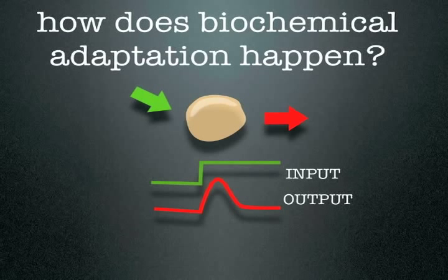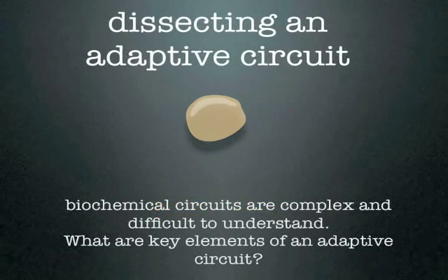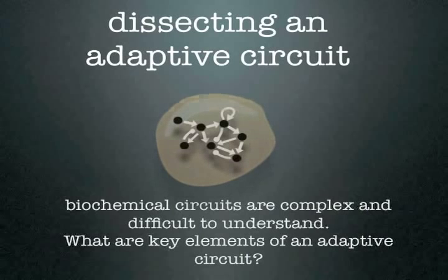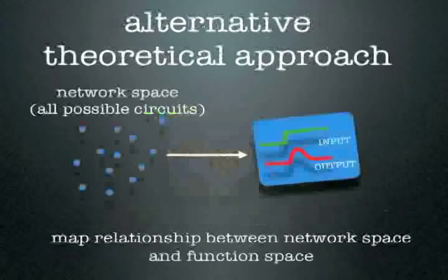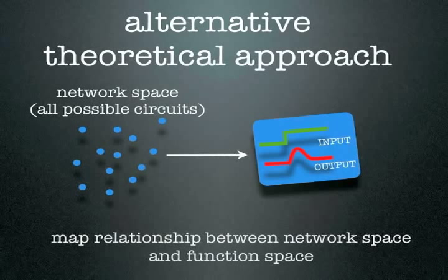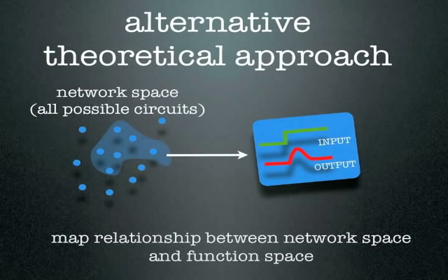But how do biochemical circuits within the cell yield adaptation? When we study cells that show adaptation, one often discovers very complex biochemical circuits that are difficult to understand. It can be challenging to identify the key elements that are responsible for adaptation. In the current study, we have taken an alternative approach, asking what are all possible enzymatic circuits that can achieve adaptation — an attempt to map the relationship between network space and function space.